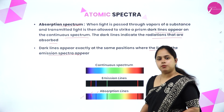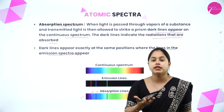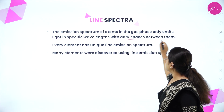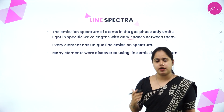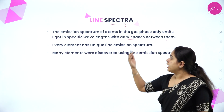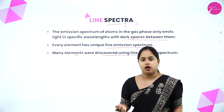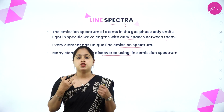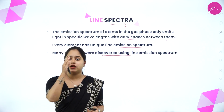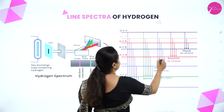In emission and absorption spectrum, lines appear on the photographic plate. The emission spectrum of atoms in the gas phase only emits light in specific wavelengths with dark spaces between them. Every element has a unique line emission spectrum, and many elements were discovered using line emission spectra. That is actually the importance of line spectra — each element has a unique line spectra.